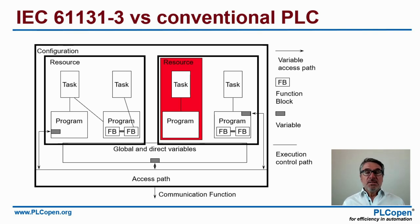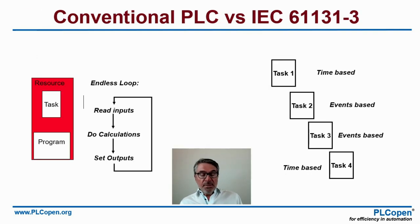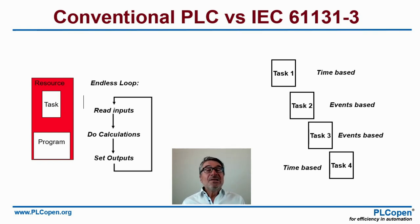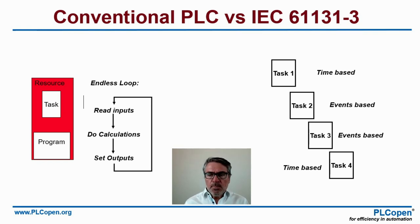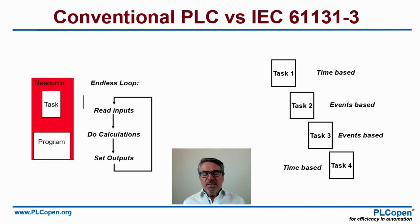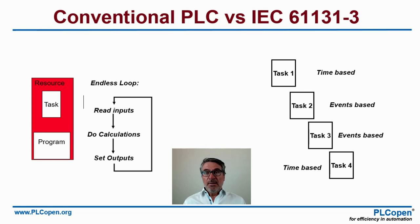Comparing this to a conventional PLC: a conventional PLC normally has one resource running one task running one program — an endless loop of reading inputs, doing calculations, and setting outputs. In IEC 61131-3, we can do much more: we can identify multiple tasks, make them time-based or event-based, and link them to use resources optimally.